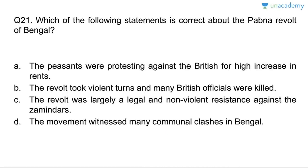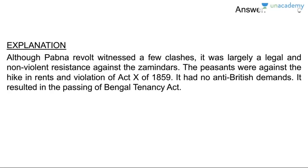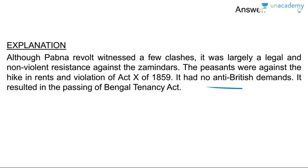Question twenty-one: about the Pabna Revolt of Bengal. The peasants protested against the British for high increase in rent — wrong. It was largely a legal and non-violent resistance against the zamindars. Answer is C. The Pabna Revolt was against hike in rents and violation of Act 10 of 1859. It had no anti-British demands and resulted in the passing of the Bengal Tenancy Act.